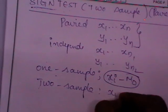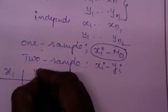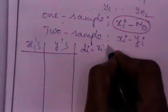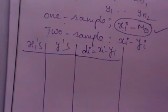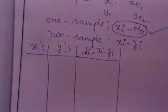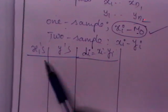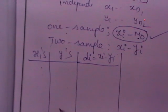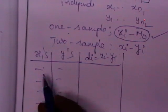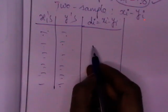For two samples, we use the difference Di = Xi minus Yi. You will be given two samples X and Y. For one sample we use Xi minus median, but whenever we have two samples, we find the difference of both samples. If there are 10 observations in one sample, you should have an equal number of observations in the other to find the differences and identify the signs.